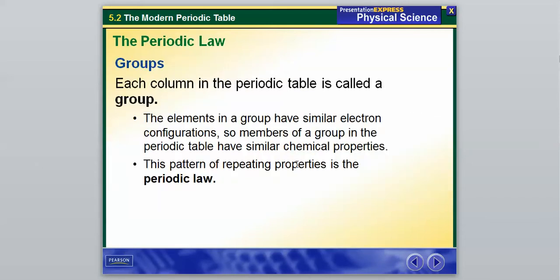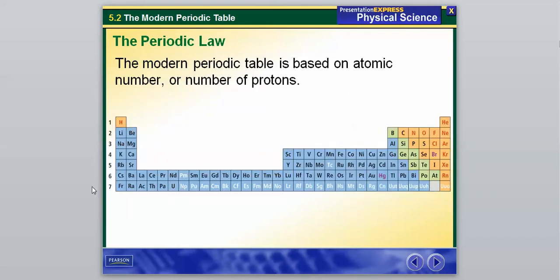And the elements in a group have similar electron configurations. So members of a group in the periodic table are going to have similar properties. So I might have misspoken earlier about the electron configuration, but we'll clarify that in class a little bit too if we need be.